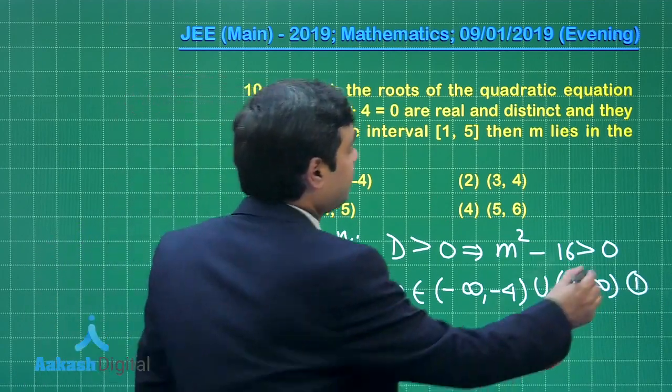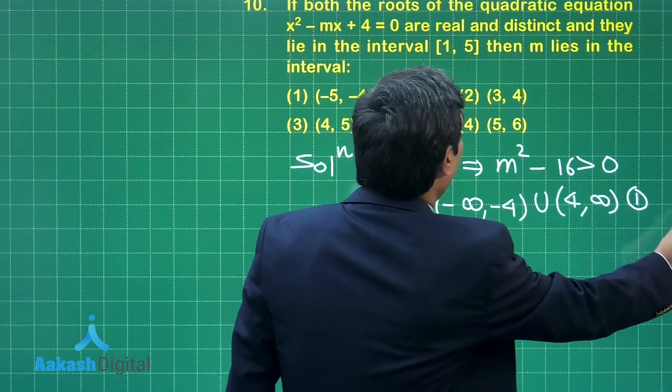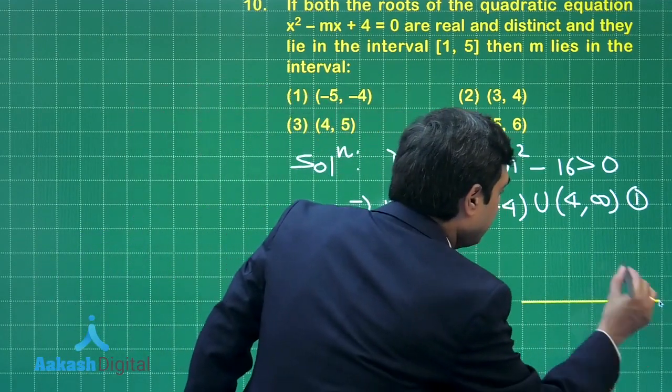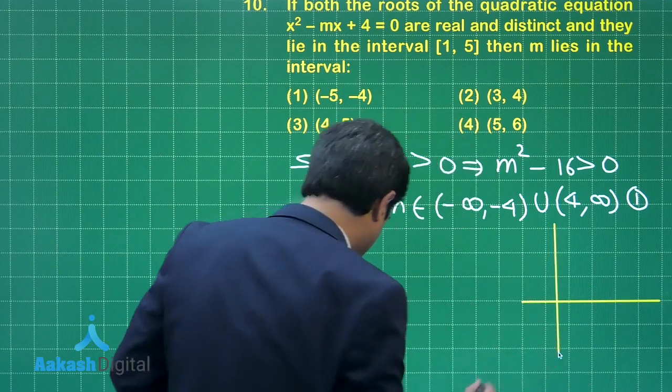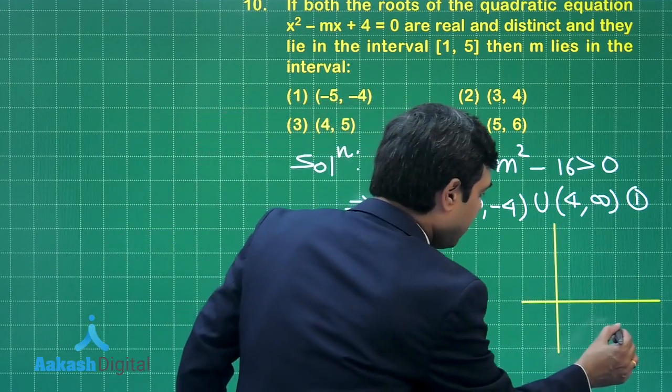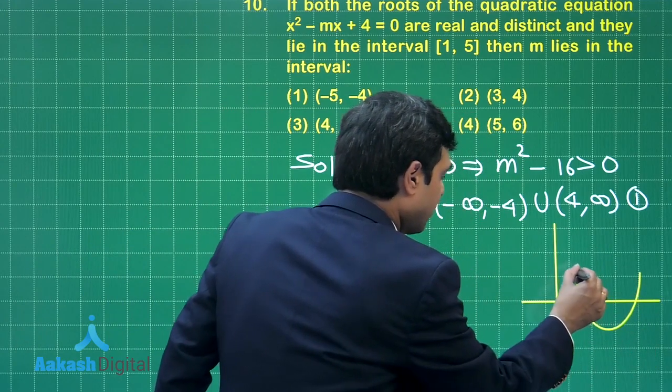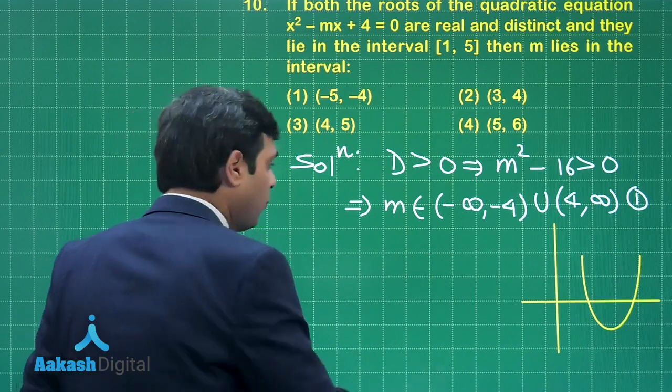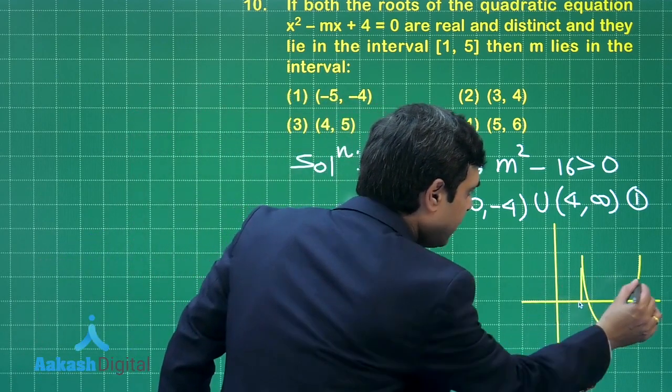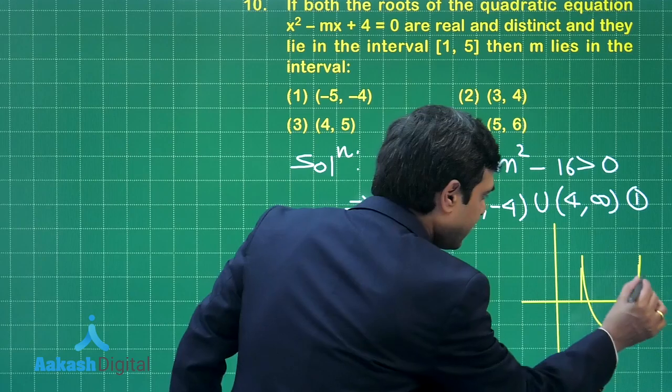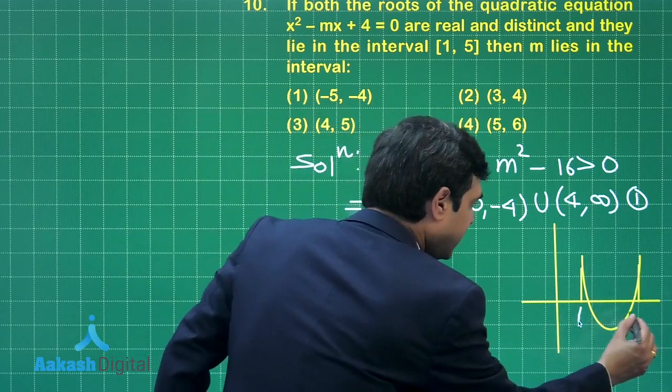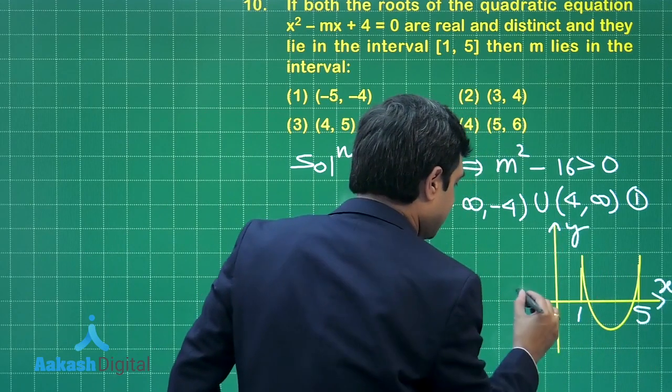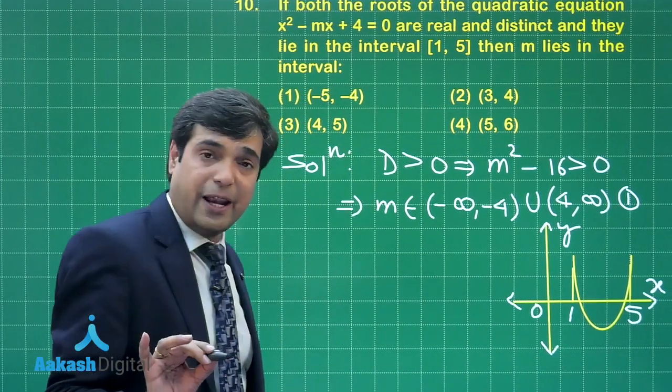Next, both roots are lying in the interval [1, 5]. So let us do one thing. Draw the system and draw here one parabola like this. Now, the question says both roots are lying in the interval [1, 5]. Let us consider 1 is here and 5 is here. So the question says this is 1, this is 5, this is obviously the origin, x-axis and y-axis also mentioned.